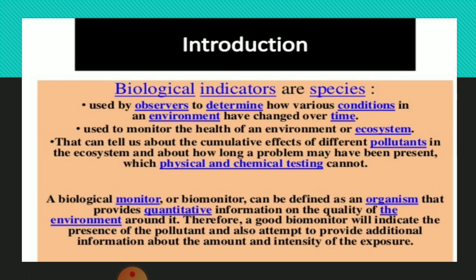Introduction: Biological indicators are species used by observers to determine how various conditions in an environment have changed over time. They are used by observers so that various environmental conditions that have changed over time can be observed or determined with the help of biological indicators. These indicators are used to monitor the health of an environment or ecosystem — whether it is polluted or functioning normally.